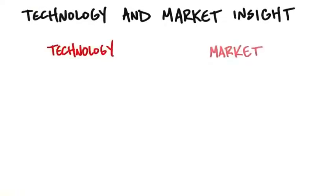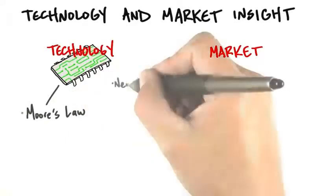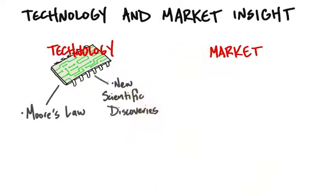Do they have technology insight or do they have market insights? And typically technology insights come from technology-driven products. Are you building chips that follow Moore's law, that is they're now doubling in density every year and therefore new functions can be embedded in them? Are these based on new scientific discoveries or new algorithms?